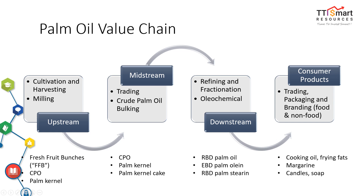CPO is made from the pulp of the fruit. It is edible and used in food products like biscuits, instant noodles, bread, and many other food items. Palm kernel oil is made from the seed of the fruit and is mainly used in cosmetics and shampoos. The main business of midstream companies is trading CPO and CPO bulking — enormous holding tanks that store crude palm oil.